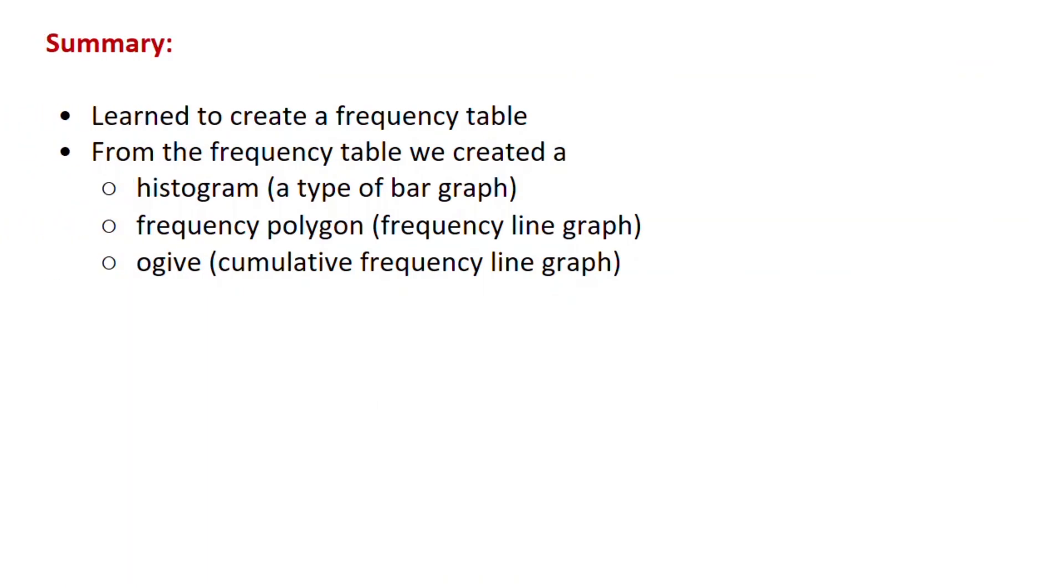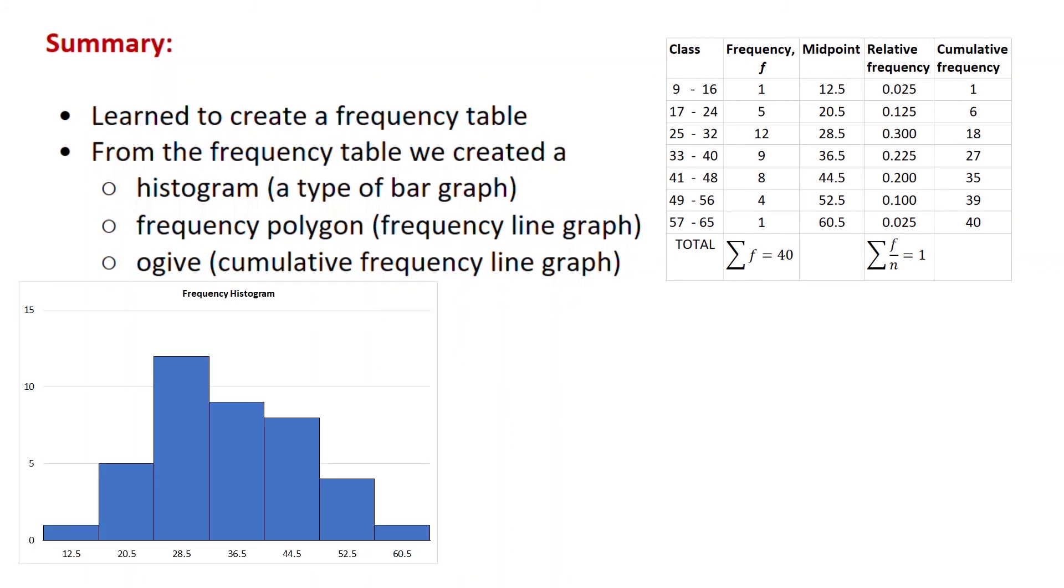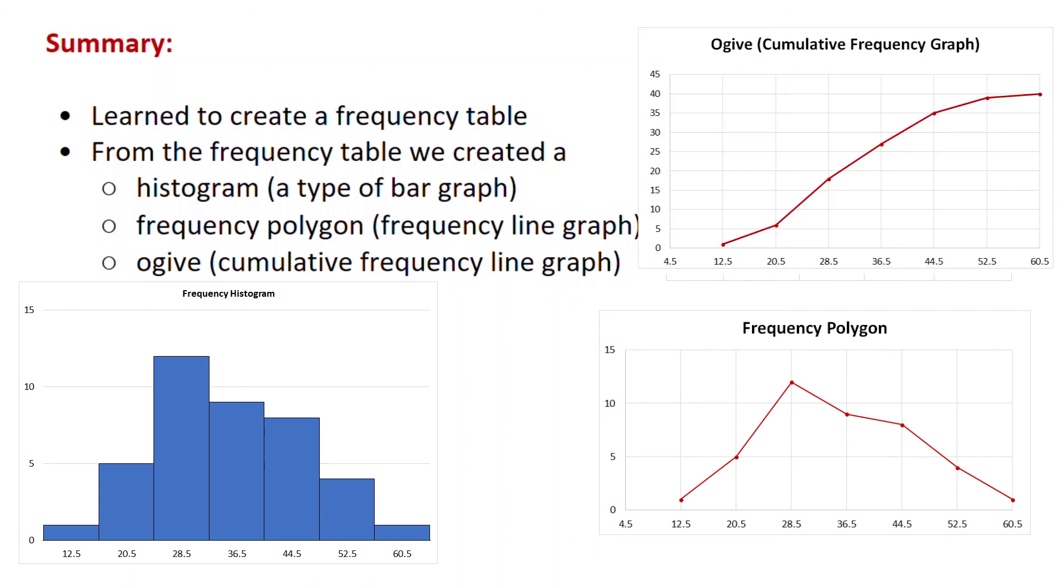In summary, we learned to tally up our data to create a frequency table. Then we added midpoint information, calculated relative frequency. We calculated cumulative frequency. And from those columns in our table, we were able to find or create histograms, which is a type of bar graph where the bars touch. Frequency polygons, that's a frequency line graph. And finally, we created an ogive, a cumulative frequency line graph.